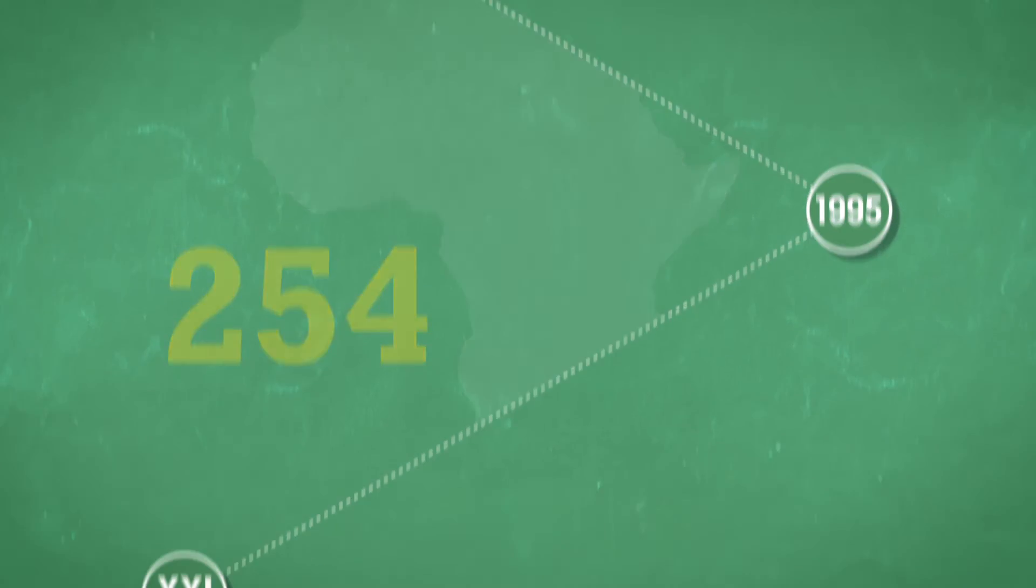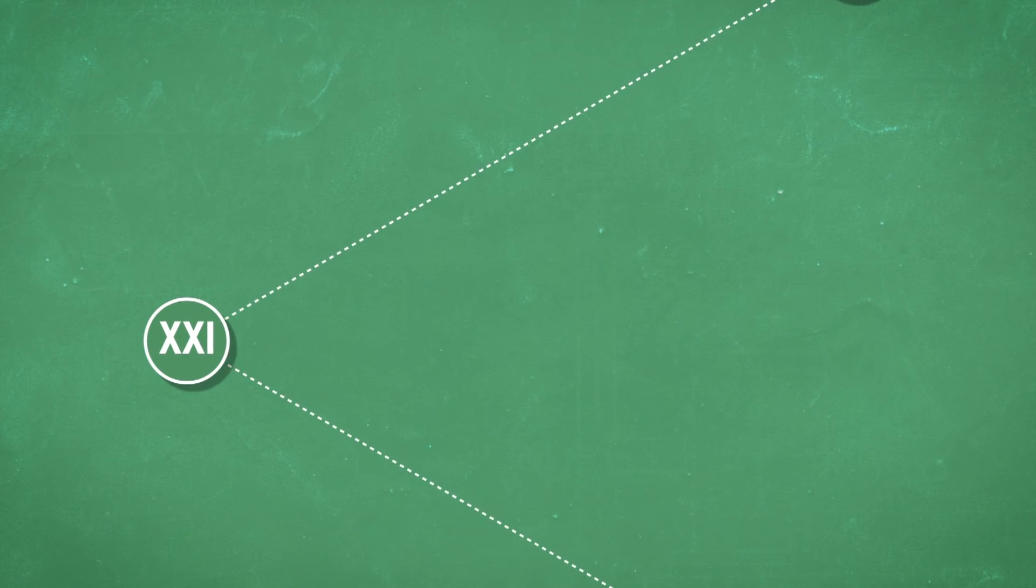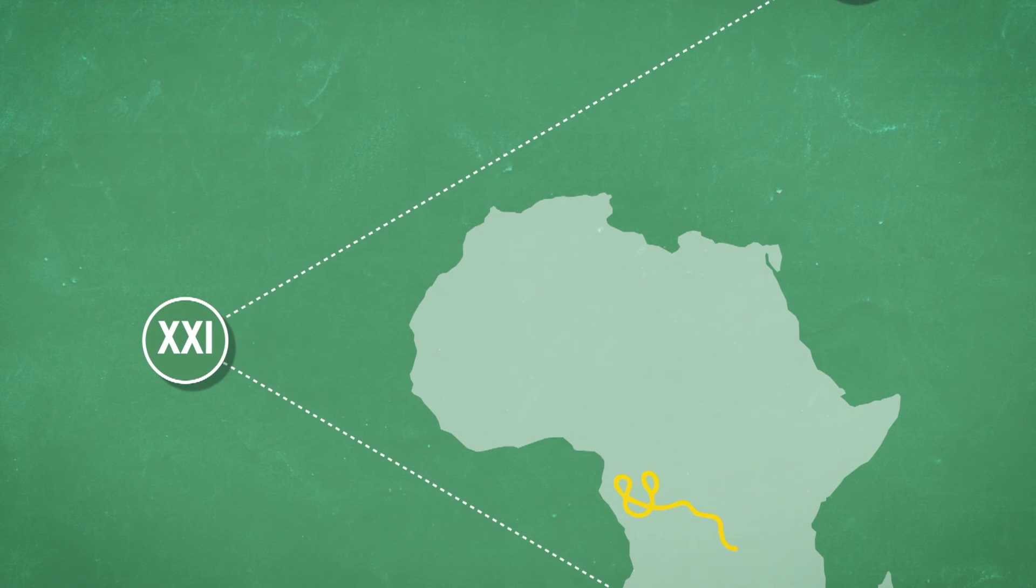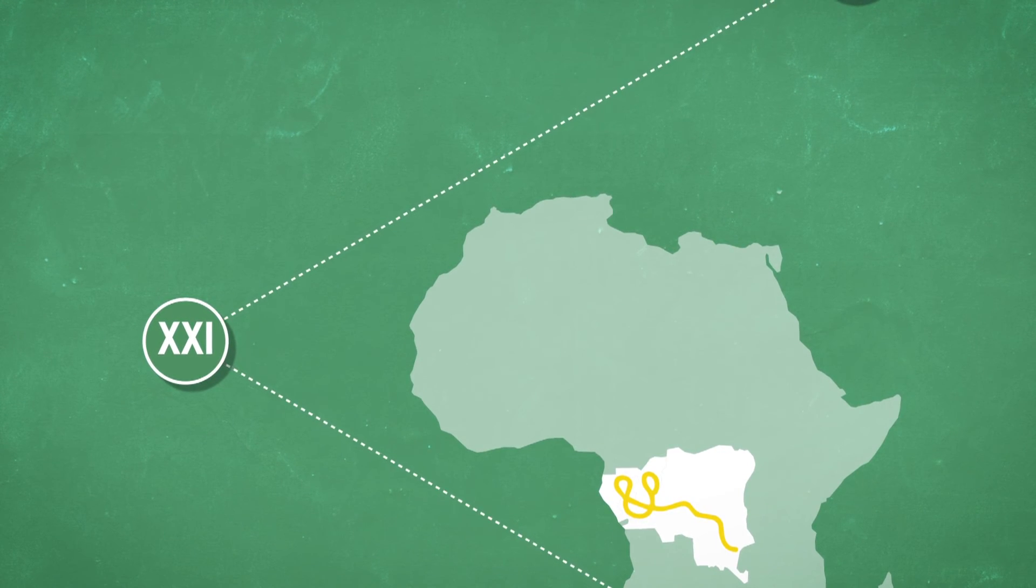Then Ebola disappeared, before resurging at the beginning of the 21st century in Central Africa, in DRC, Gabon and Congo-Brazzaville.